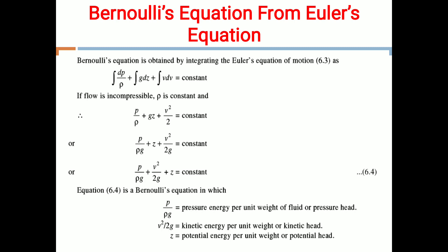We get P by rho G plus V squared by 2G plus Z is equal to constant. This is equation 6.4, known as Bernoulli's equation, where P by rho G is the pressure energy per unit weight or pressure head, and V squared by 2G is the kinetic energy per unit weight or kinetic head.